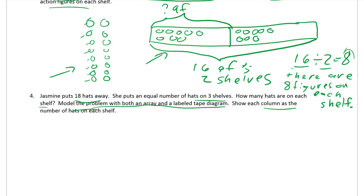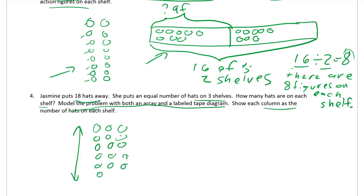We know there are three shelves, so that's three columns — columns go up and down. We don't know how many are in each column, but we know there are 18 hats. Counting: three, four, five, six, seven, eight, nine, ten, eleven, twelve, thirteen, fourteen, fifteen, sixteen, seventeen, eighteen. We've done three times six equals eighteen in every assignment in this unit, so you should know there's going to be a six. There's your array.